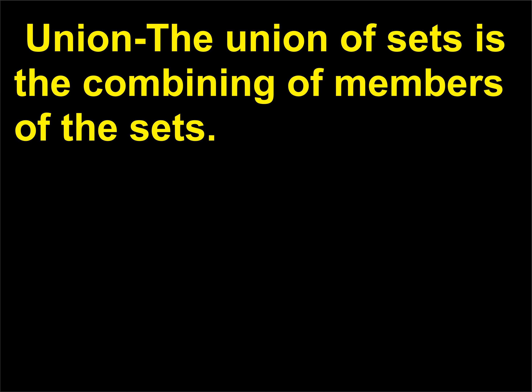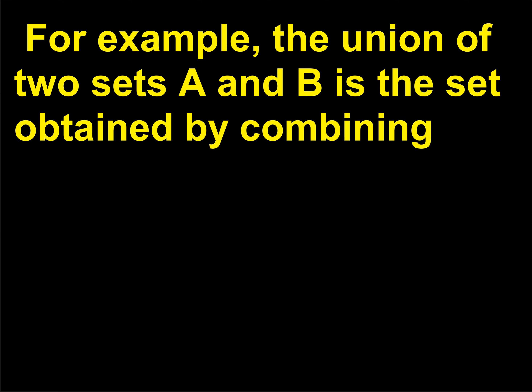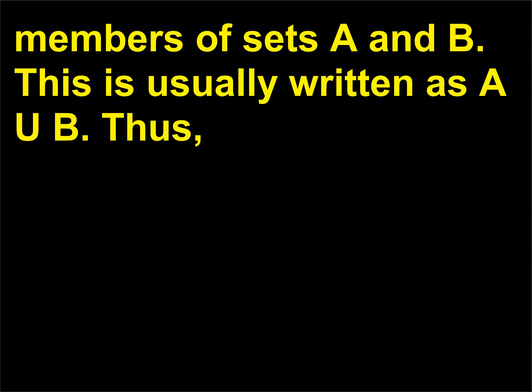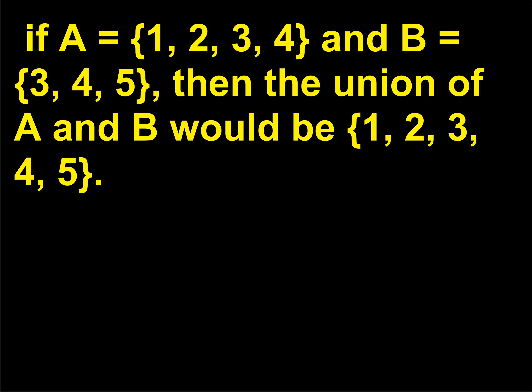Union: the union of sets is the combining of members of the sets. For example, the union of two sets A and B is the set obtained by combining members of sets A and B, written as A∪B. Thus, if A = {1, 2, 3, 4} and B = {3, 4, 5}, then the union of A and B would be {1, 2, 3, 4, 5}.